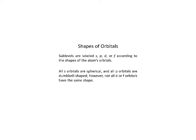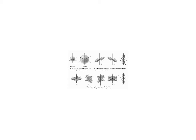All S orbitals are spherical, P orbitals are dumbbell-shaped, and D and F orbitals are more complex — you won't need to recognize D and F shapes, but you should be able to recognize S and P orbitals. S has one shape — a sphere. P has three orientations along the X, Y, and Z axes. D has five different shapes, and F has seven.